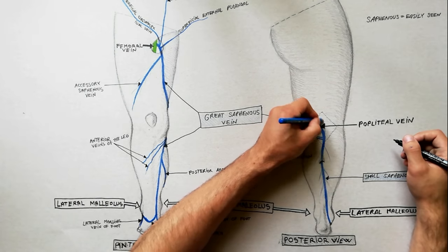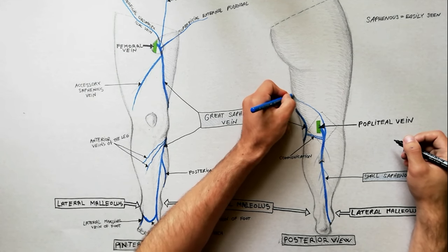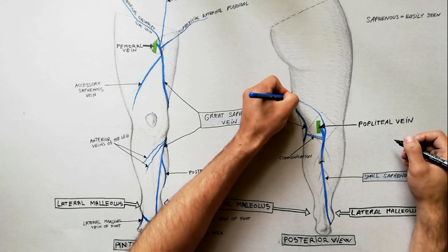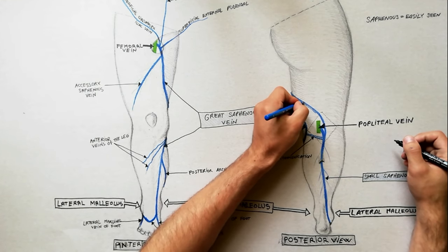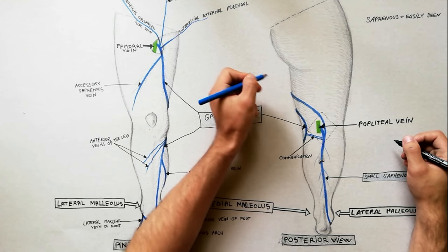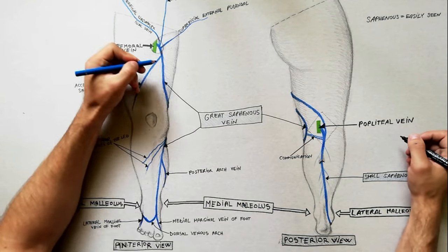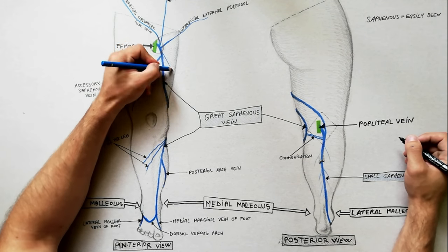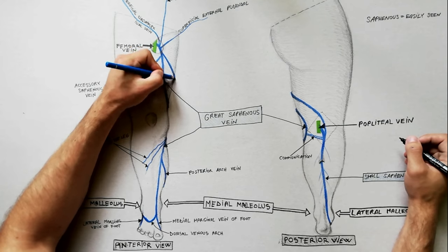The other important communication is in the thigh, and is called the Giacomini vein. The Giacomini vein begins from the upper part of the small saphenous vein, runs upward and medially towards the medial aspect of the thigh, until it reaches the upper part of the great saphenous vein, where it terminates.